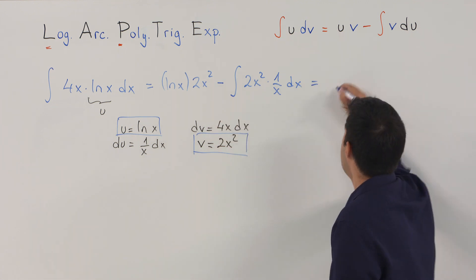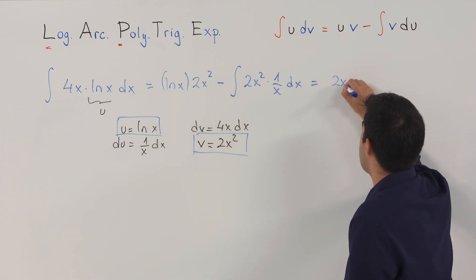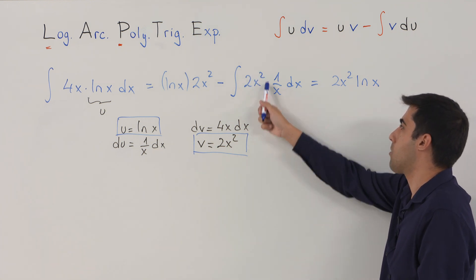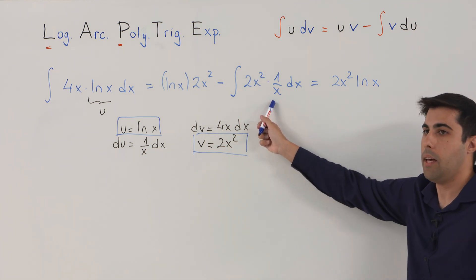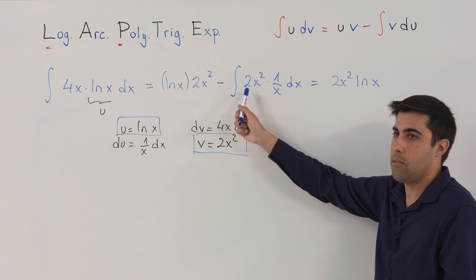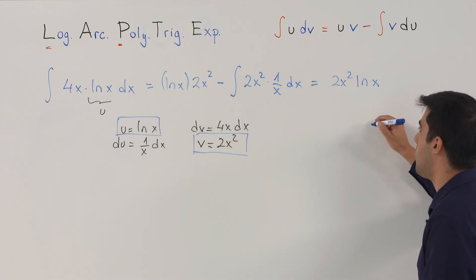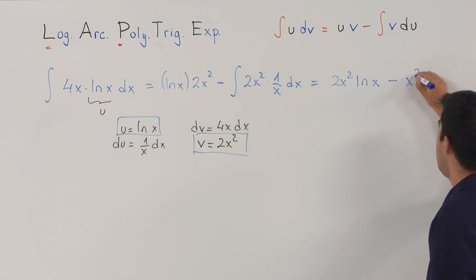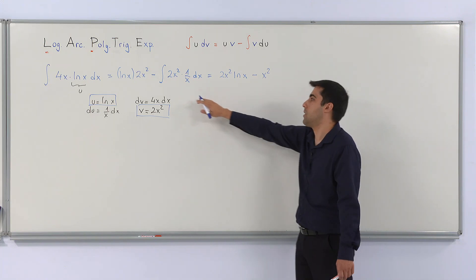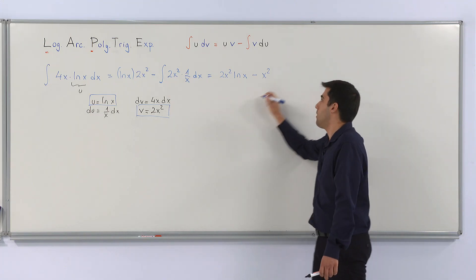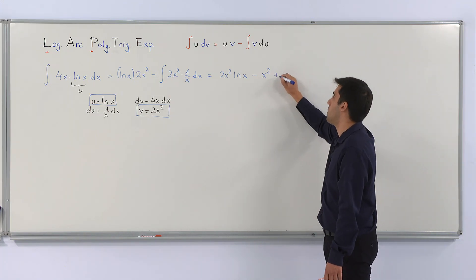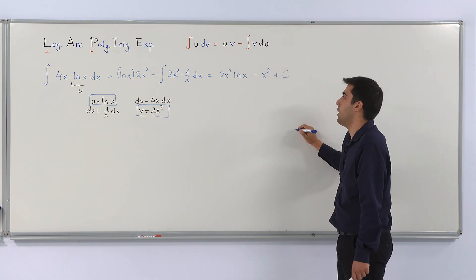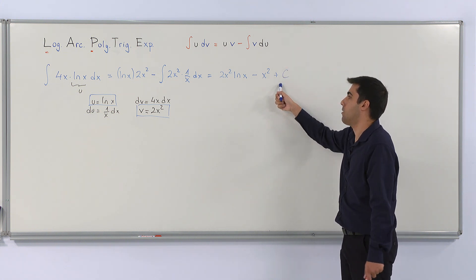Now this polynomial here can be easily integrated using the power rule. We have 2x squared divided by x, which is 2x. The integral of 2x gives us x squared. So the result is 2x squared ln(x) minus x squared. Because this is an indefinite integral, we add the integration constant c.